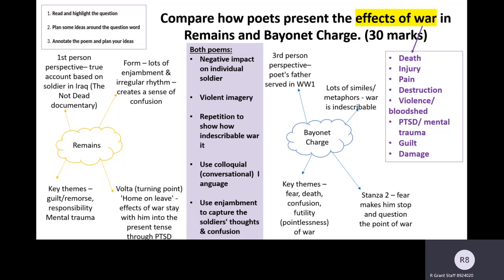Step three is where you plan your ideas and annotate the poem. Rather than just jumping in and annotating, I want to have a clear idea of what the poems are and how they link to the effects of war. For Remains, I know from memory that this is written in a first person perspective. It's a true story based on the documentary — it's available on YouTube, you should watch it. The key theme of this poem is guilt and responsibility, and the trauma that the soldier suffers afterwards. Structurally, there is a volta — a turning point — when he comes home on leave, switching from the war to the present, showing that the PTSD is still continuing. The form has lots of enjambment and an irregular rhythm which creates a sense of confusion as he questions himself.